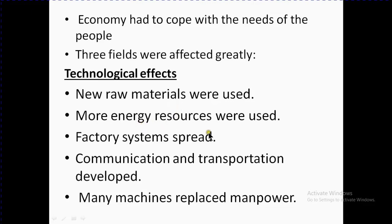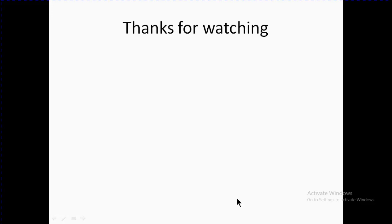The factory system spread, communication and transportation developed, and many machines replaced manpower. A lot of factories were built, and communication and transportation developed significantly. In this way, these developments increased productivity, and machines replaced the work previously done by people.